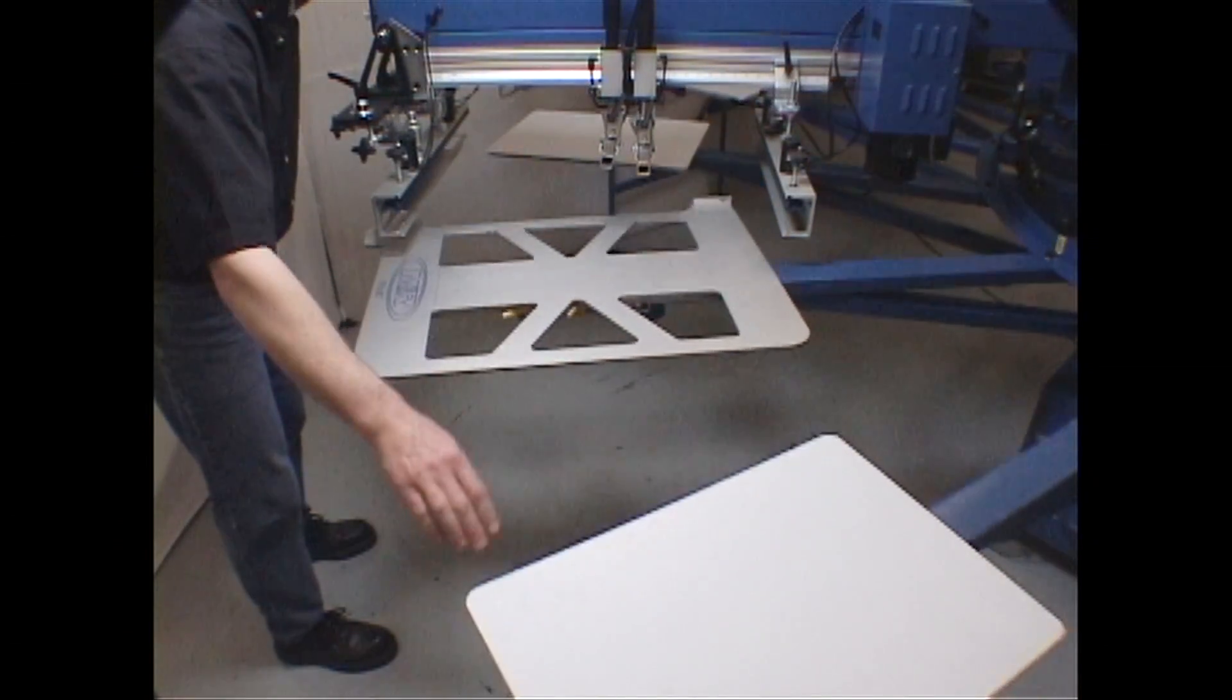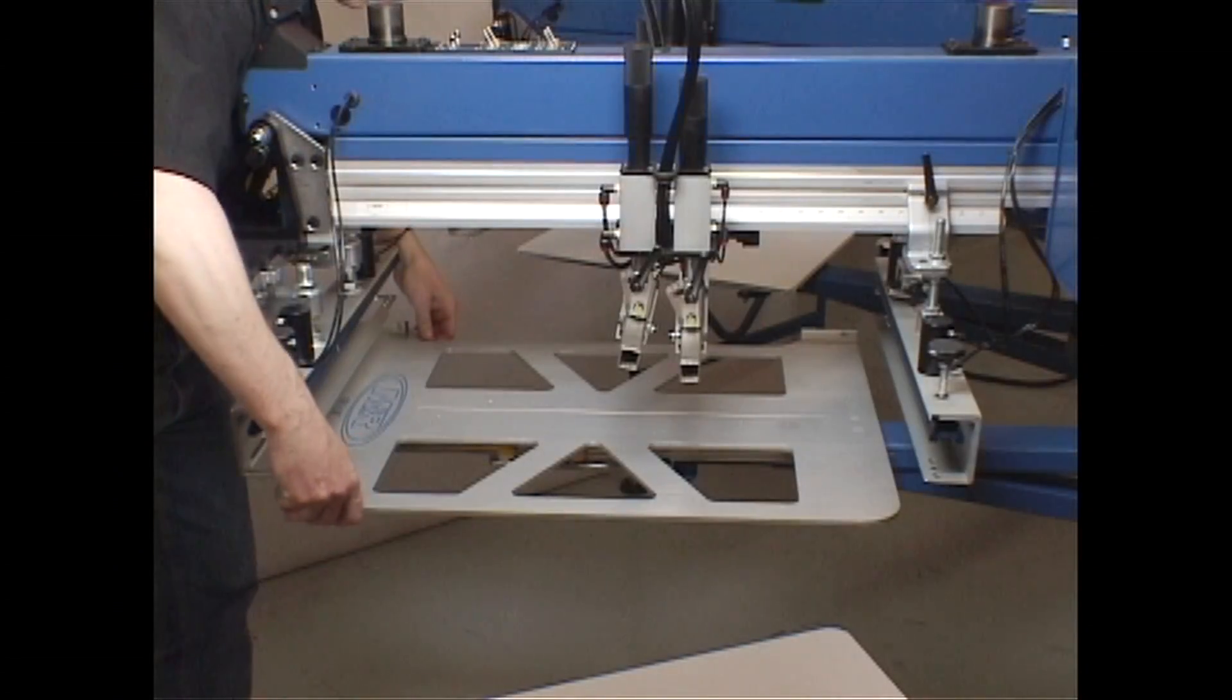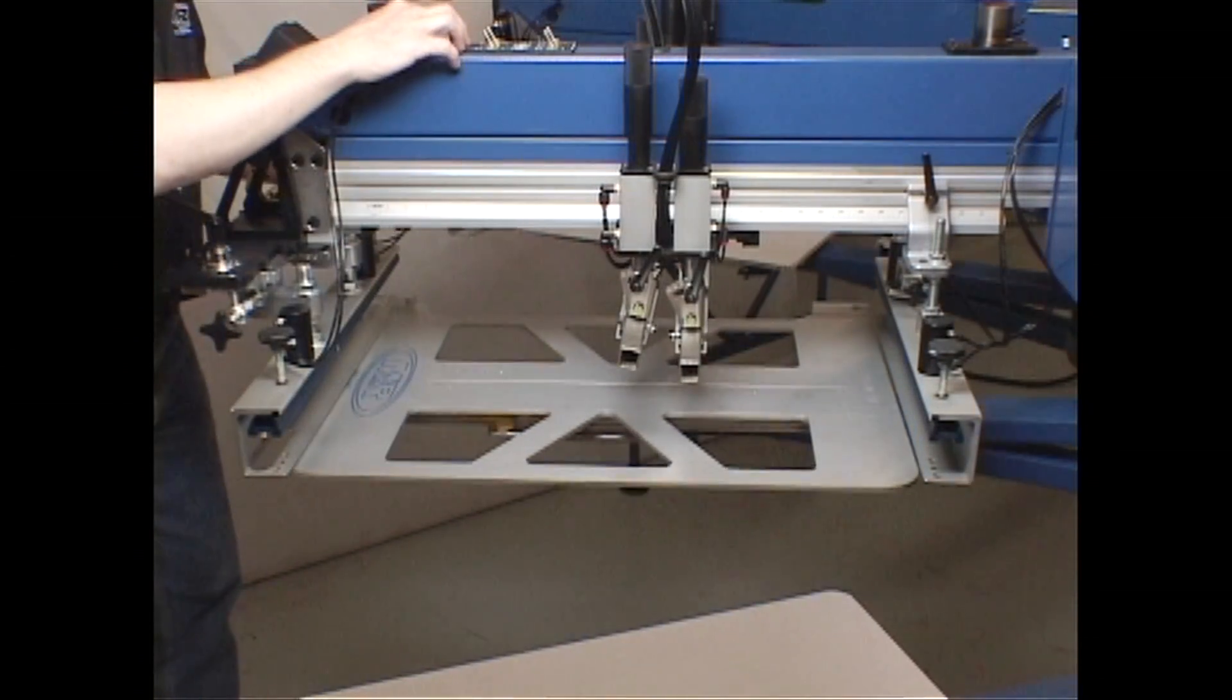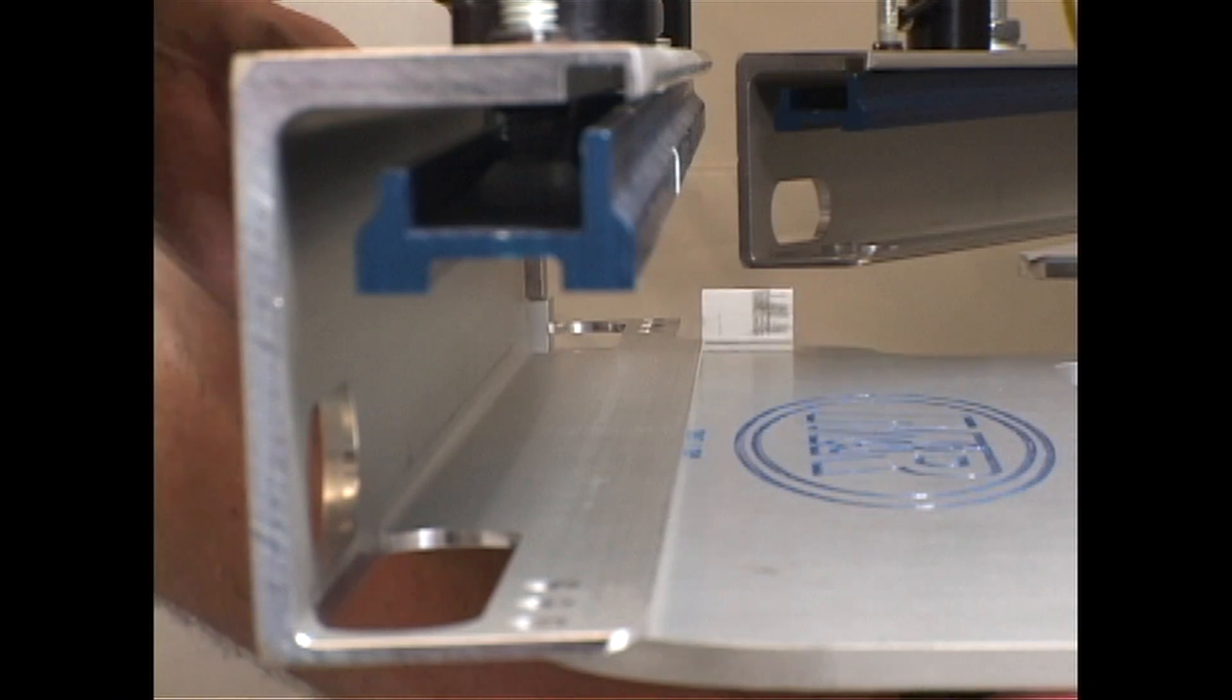Manually index the Tri-Lock pallet under the printhead. Align the Tri-Lock pallet's front stop block just to the inside of the front frame holder's vertical inside edge. Raise the lower carousel into print position and fine-tune the Tri-Lock pallet position.